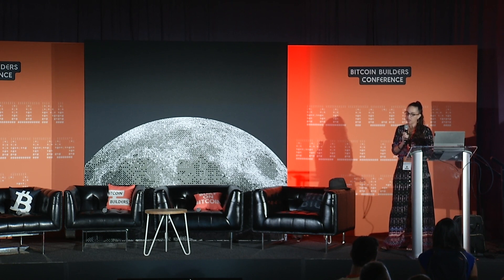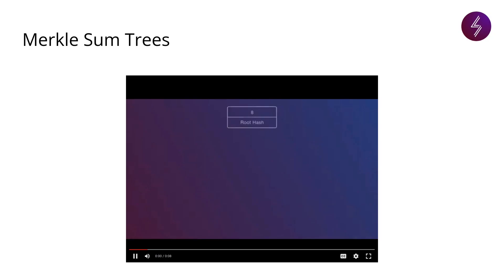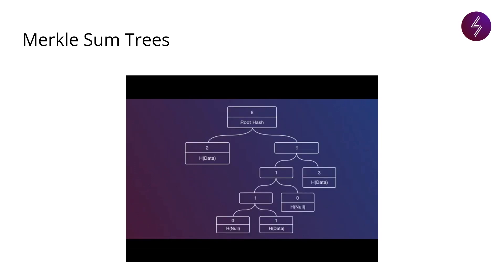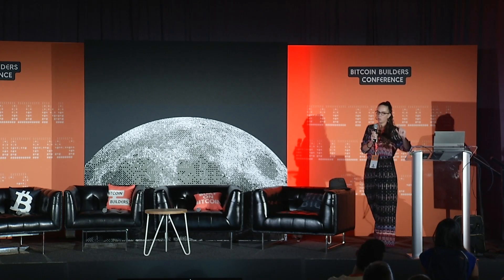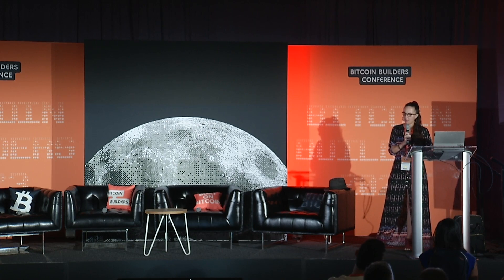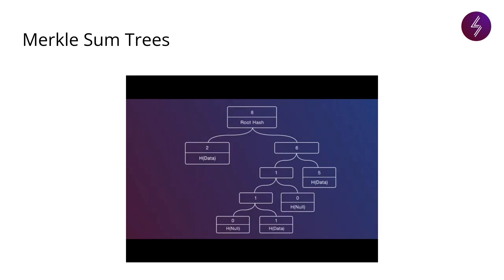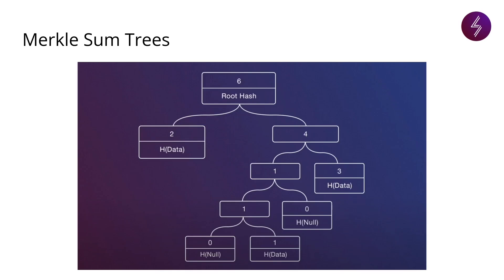Now we're going to talk about a Merkle sum tree. Look at the sum at the top of that tree and we'll see how when one leaf changes, the sum all the way at the top changes as well. That 5 changes to a 3, and that change is reflected all the way up the tree. In a Merkle sum tree, each leaf or node has a numerical value — in this case associated with the amount of assets. If one leaf changes, that amount gets summed all the way up to the top.